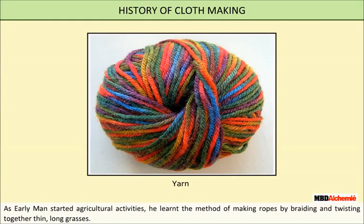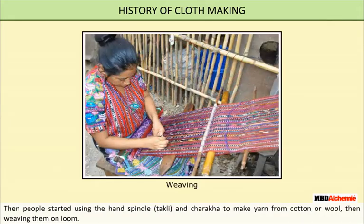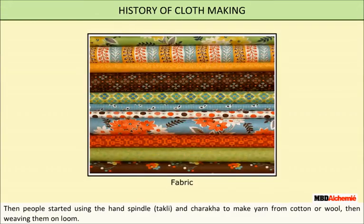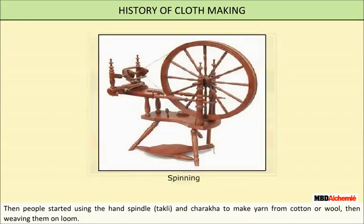As early man started agricultural activities, he learned the method of making ropes by braiding and twisting together thin long grasses. Then people started using the hand spindle, tatli, and charkha to make yarn from cotton or wool, and then weaving them on a loom.